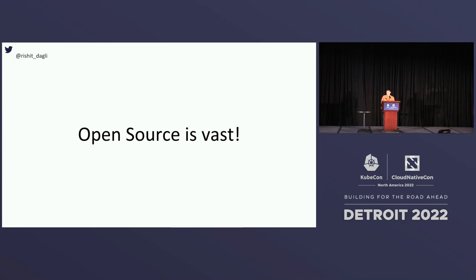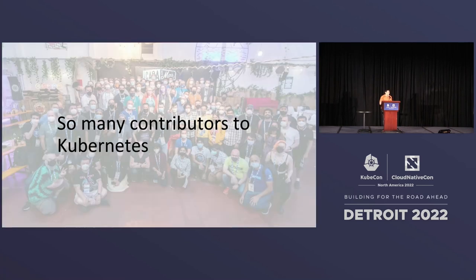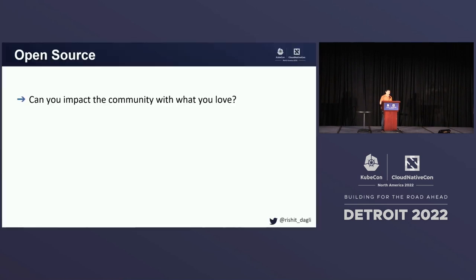Open source is vast, and there are so many great CNCF projects. All of you might have heard of one CNCF project or the other. Some of you might have contributed to it. There are so many great CNCF projects — I couldn't even fit the whole landscape in a single slide. There are so many contributors to Kubernetes, and all of this can make open source a bit intimidating if you are just starting out. Or even if you have been contributing, sometimes contributing to new projects can just get intimidating.